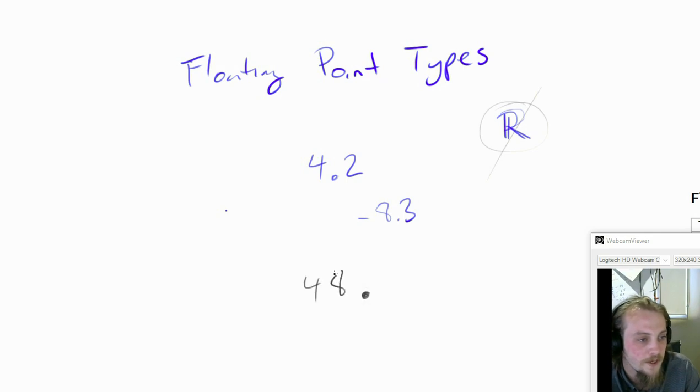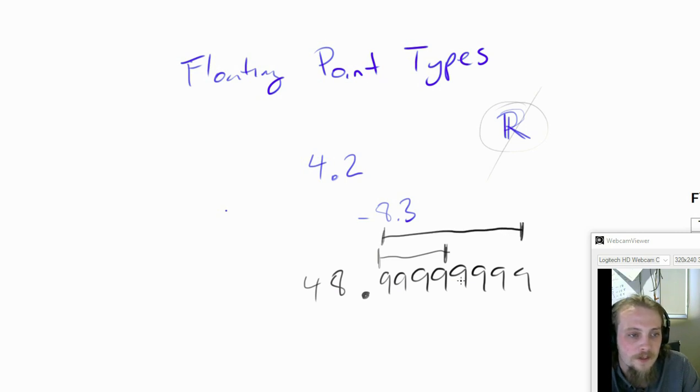So for example, if I take the number 48.9999999, for some types, they might only be able to store this accurately, whereas other types might be able to store this accurately. But it is limited. This is something you need to think about. It doesn't map to mathematics perfectly.